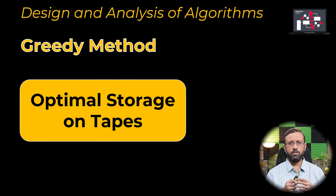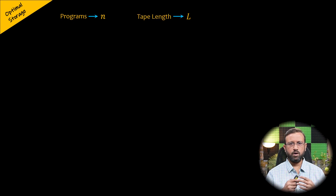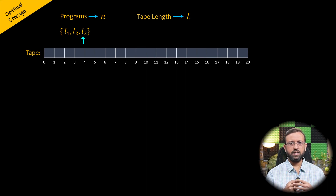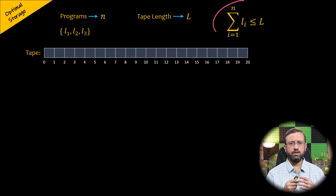In this video, we will look at the optimal storage on tapes problem. This problem is solved using the greedy method. We have n programs to be stored on a tape of length L. Each program has a length associated with it, represented as L1, L2, L3, and so on. All programs can be stored on the tape if and only if the sum of their lengths is less than or equal to the length of the tape.